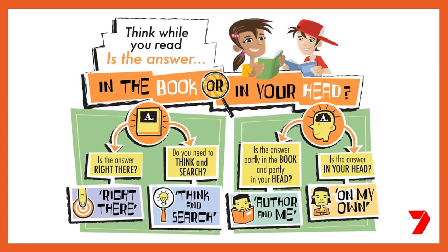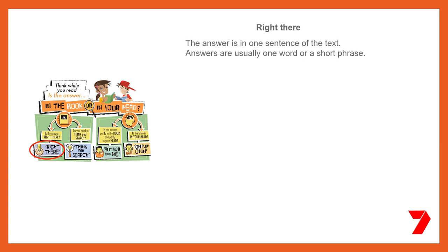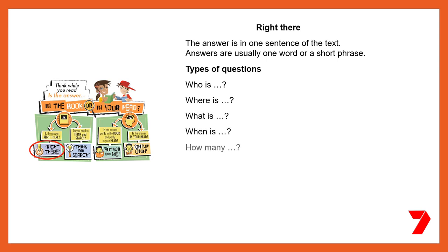QAR uses two levels of questions that help you work out where information can be found. These levels are either 'in the book' or 'in your head.' In-the-book strategies help answer literal questions, which means that the answers can be found in the text. There are two kinds of strategies for in-the-book questions. Answers to 'right there' questions can be found in one sentence of the text, and answers are usually one word or a short phrase.